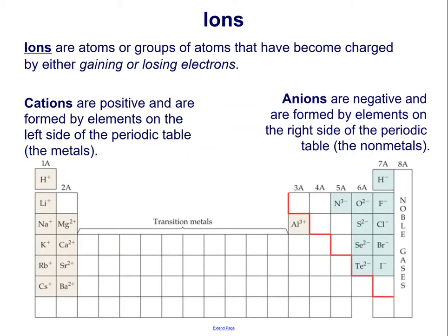Ions are atoms or groups of atoms that have become charged by either gaining or losing electrons. Cations are positive and are formed by elements on the left side of the periodic table, the metals. Anions are negative and are formed by elements on the right side of the periodic table, the nonmetals.